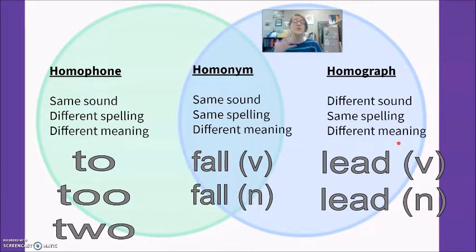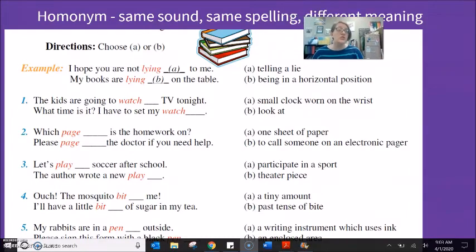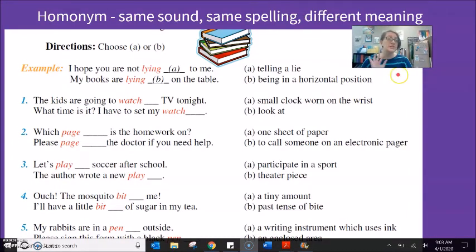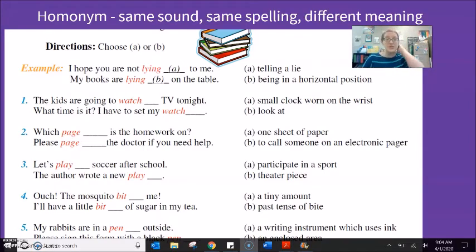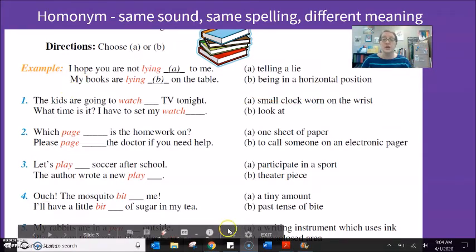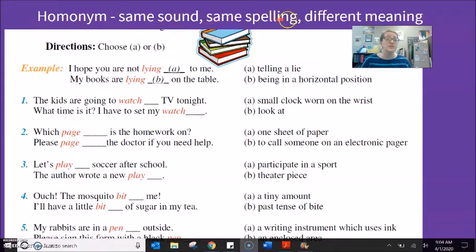Homographs are the ones we will put the most focus on in future practicing English videos. The worksheet in your packet — this is the very last practice in your week one distance English packet. The first section practices homonyms, where they have the same sound, the same spelling, but different meanings. These are the easiest, because you don't have to spell differently or pronounce differently — you just have to remember that the word has different meanings.